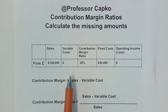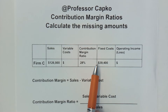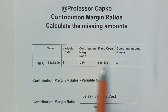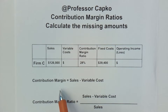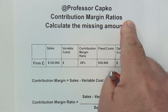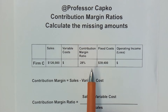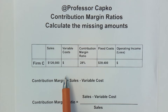In an earlier video, I calculated various numbers such as sales, variable costs, and fixed costs for various firms altogether. If you want to take a look at that video, I've linked it up here. This one is going to be a breakdown of Firm C from that video, to give you some more detail in case you didn't quite catch it.